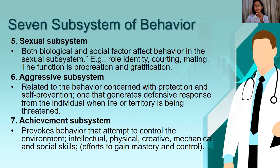The fifth subsystem is the sexual subsystem. Both biological and social factors affect behavior here; examples include role identity, courting, and mating, and its function is procreation and gratification. The sixth is the aggressive subsystem, related to behavior concerned with protection and self-preservation, generating defensive responses when life or territory is threatened. The seventh is the achievement subsystem, which provokes behavior that attempts to control the environment through intellectual, physical, creative, mechanical, and social skills — it represents efforts to gain mastery and control.